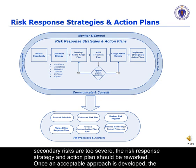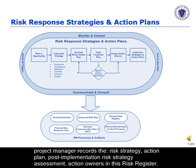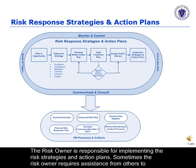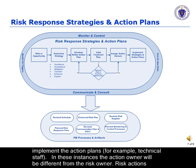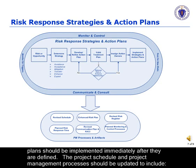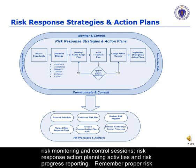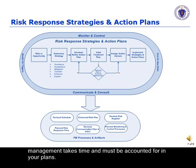If threats introduced by the secondary risks are too severe, the risk response strategy and action plan should be reworked. Once an acceptable approach is developed, the project manager records the risk strategy, action plan, post-implementation risk strategy assessment, and action owners in the risk register. The risk owner is responsible for implementing the risk strategies and action plans. Sometimes the risk owner requires assistance from others, such as technical staff — in these instances, the action owner will be different from the risk owner. Risk action plans should be implemented immediately after they are defined. The project schedule and project management processes should be updated to include risk monitoring and control sessions, risk response action planning activities, and risk progress reporting. Remember, proper risk management takes time and must be accounted for in your plans.